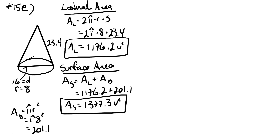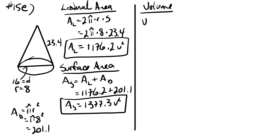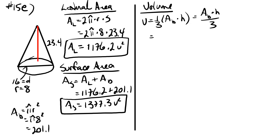Now we tackle the volume. Volume equals one third times the area of the base times the height. However, we don't have the height yet. We form a right triangle by dropping a line from the top of the cone to the base center, giving us the height, the radius as the base, and the slant height as the hypotenuse. Using the Pythagorean theorem: h squared plus eight squared equals twenty three point four squared. Therefore h squared equals twenty three point four squared minus eight squared, which equals four hundred and eighty three point five six.